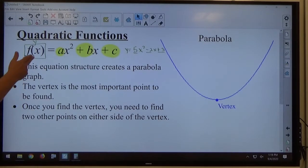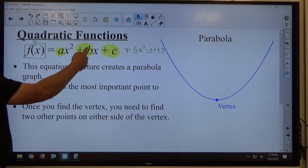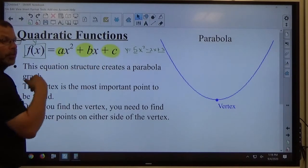They're going to use the x squared term, called the quadratic term, followed by the x term, known as the linear term, followed by the number, which is known as the constant.